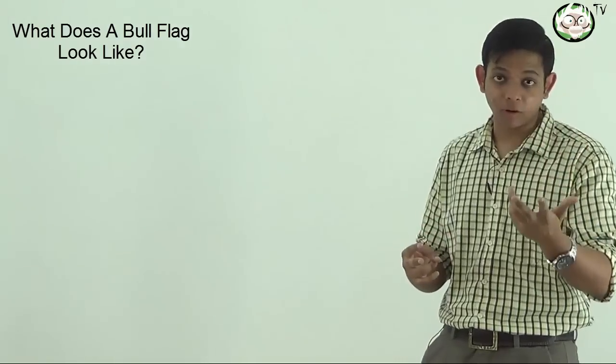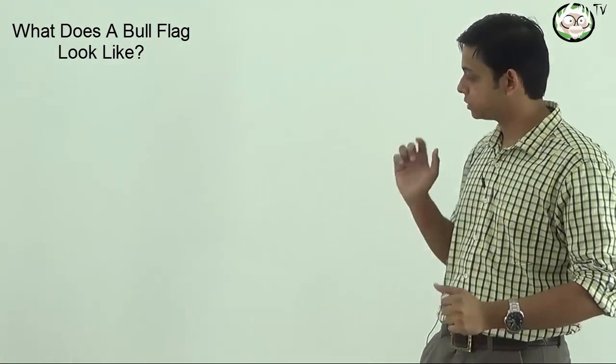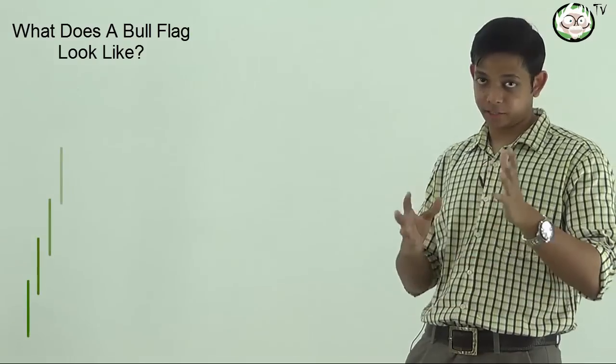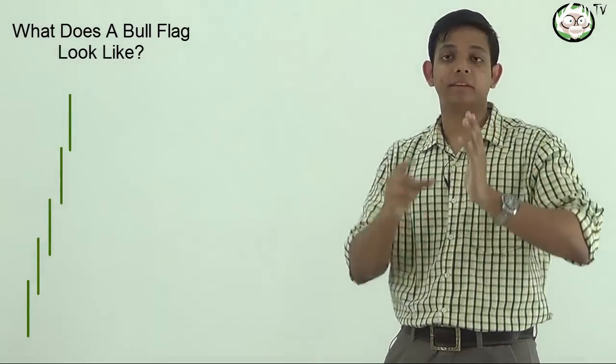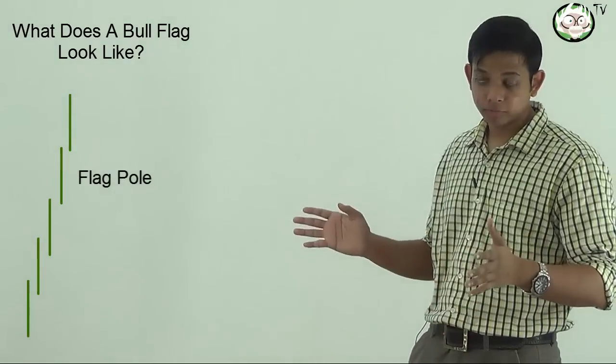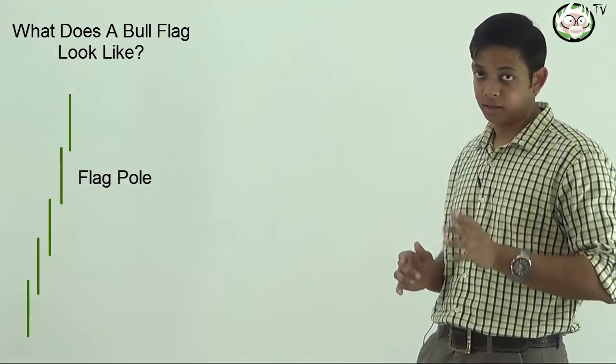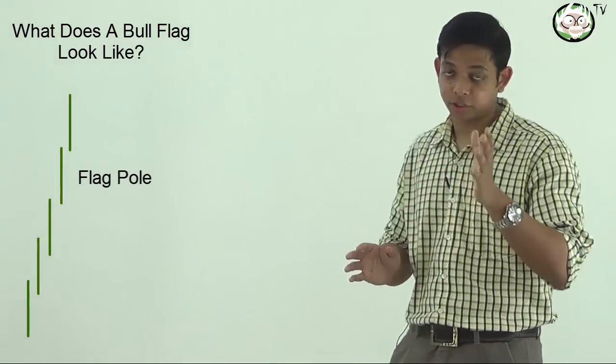So what is a flag? Before I explain what a flag is, I think it is better that since we are all visual technical traders you should see one. So this is what a flag looks like. It's made of two parts, the pole and the flag itself. So this sharp rise that you see here, this is the pole, this is basically markets rallying quite sharply. I need to point out, a sharp move is important.